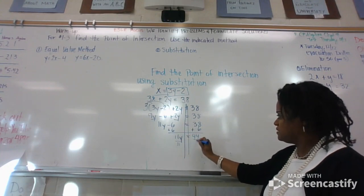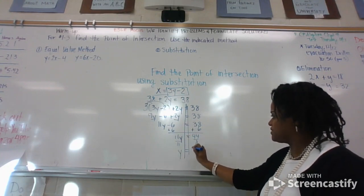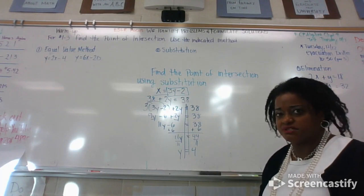Eleven y equals 44. Divide by 11. Y equals four. So that's the first step.